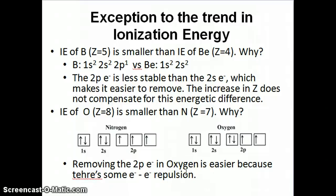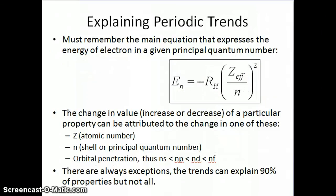We're done discussing ionization energy — both the trend and the exceptions. I want to remind you that the next couple of trends I'll cover in upcoming videos will be gone through more quickly than ionization energy. I spent a lot of time here because I want you to use the same reasoning — explaining the trend and the exceptions — for all the other periodic trends. What's important is always asking: what is the effect on the binding energy equation, particularly on the Z effective value and on the n value?